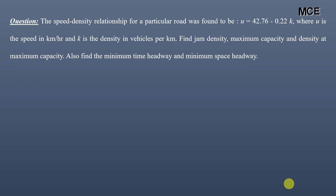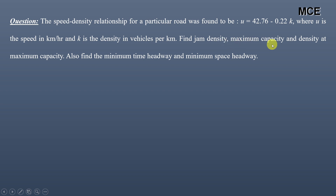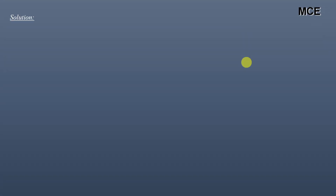Hello and welcome back to Master Civil Engineering. In this video we will learn how to find traffic flow parameters from the speed-density relationship. The given question states that the speed-density relationship for a particular road is u = 42.76 − 0.22k, where u is the speed in km/h and k is the density in vehicles per kilometer. We need to find the jam density, maximum capacity, density at maximum capacity, minimum time headway, and minimum space headway.